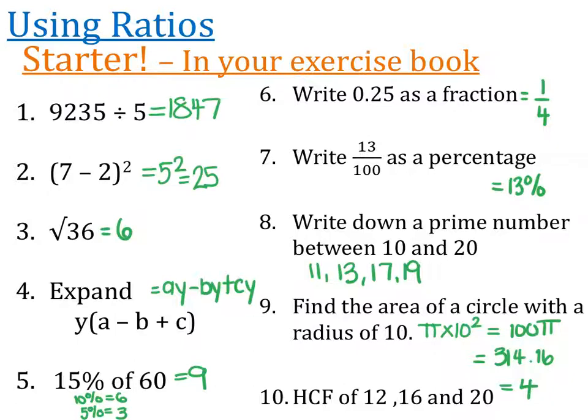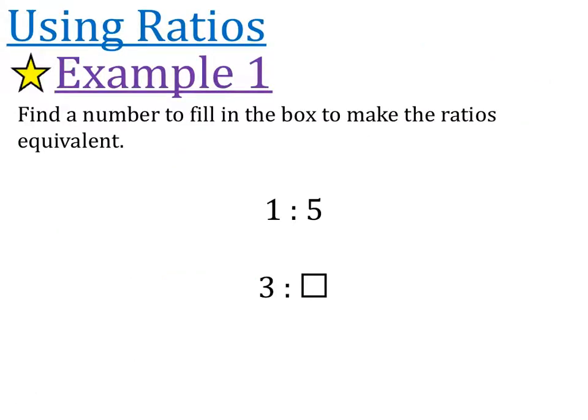Okay, let's get started on using these ratios. So in this example, we're asked to find a number to fill in the box to make the ratios equivalent. Equivalent is just a fancy word for the same. So what I'm going to first ask myself is how do I get from 1 to 3? And in order for me to get from 1 to 3, I need to multiply by 3. So what I'm going to do on the other side is I'm also going to multiply by 3. 5 times 3 is 15, so the answer that we're looking for is 15.